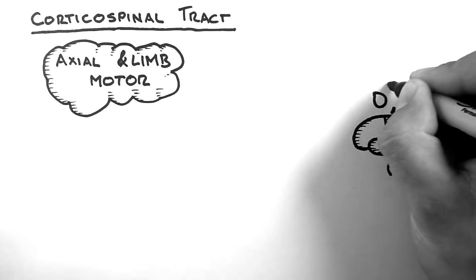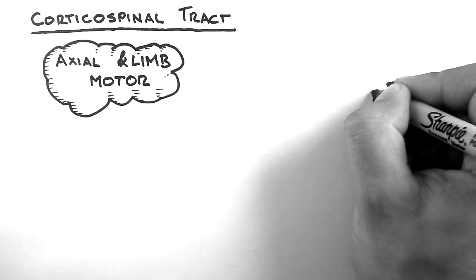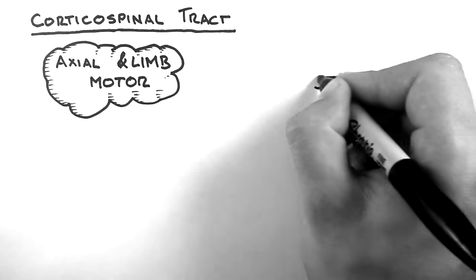So, our journey begins with two neurons. One will ultimately innervate the axial muscles, and the other will innervate the limb muscles.